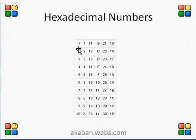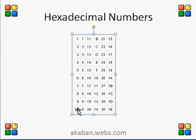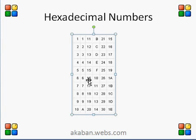In this chart we can see the decimal numbering system and in the middle this is the hexadecimal numbering system. The 10th of decimal numbering system is equal to A, 11th of decimal is equal to B, and in the same way 15th is equal to F. The 16th is equal to 10 in hexadecimal numbering system.